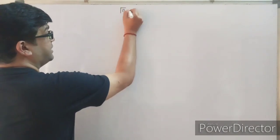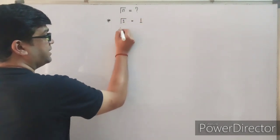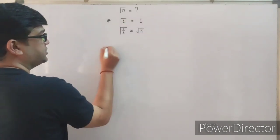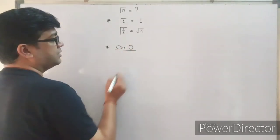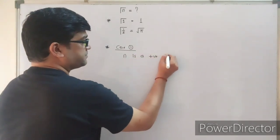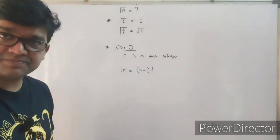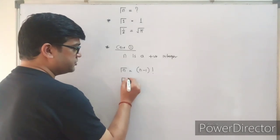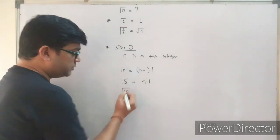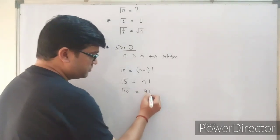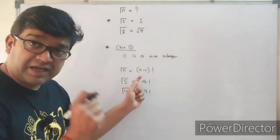To calculate Γ(n), remember two important values: Γ(1) = 1 and Γ(1/2) = √π. Case 1: if n is a positive integer, then Γ(n) = (n−1)!. For example, Γ(5) = 4! and Γ(10) = 9!. So if n is a positive integer, Γ(n) is simply (n−1) factorial.